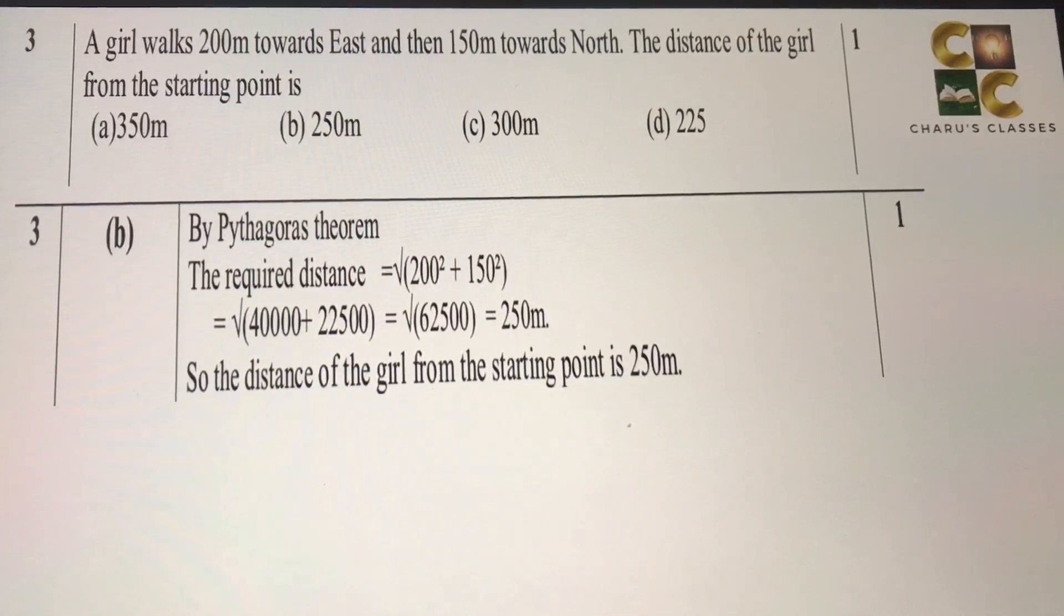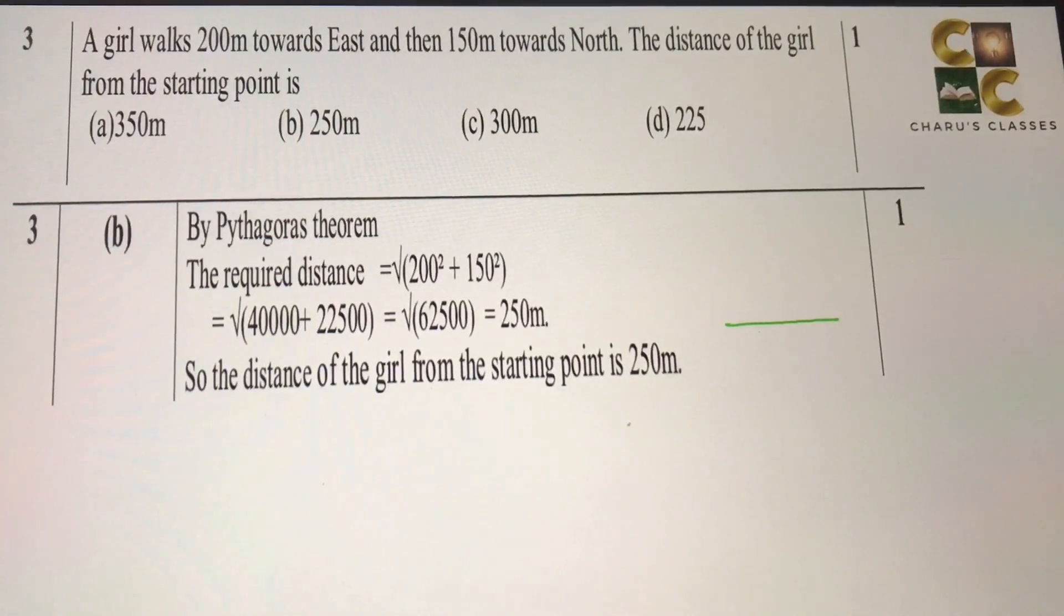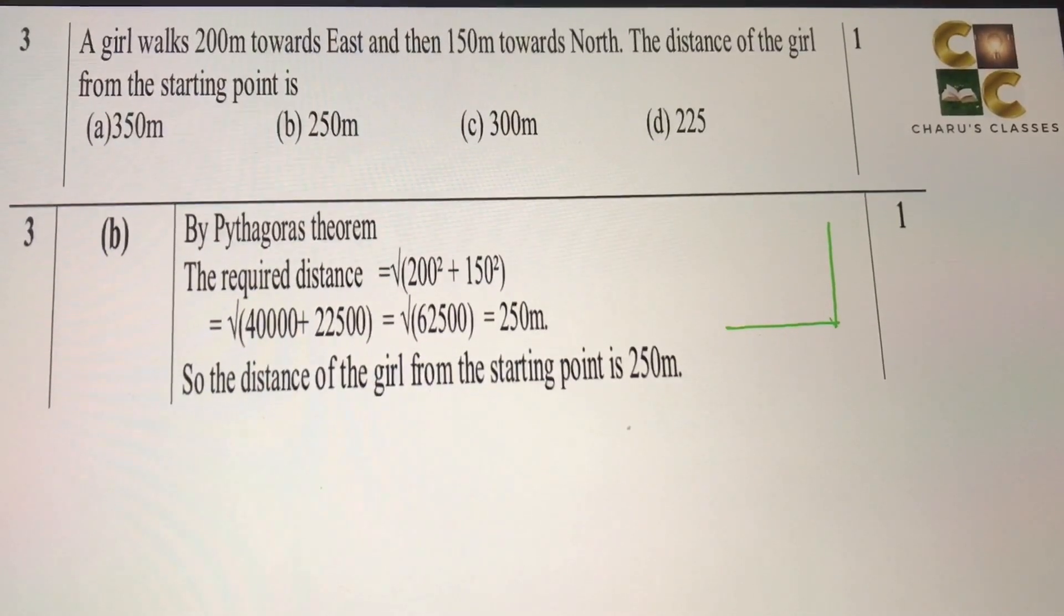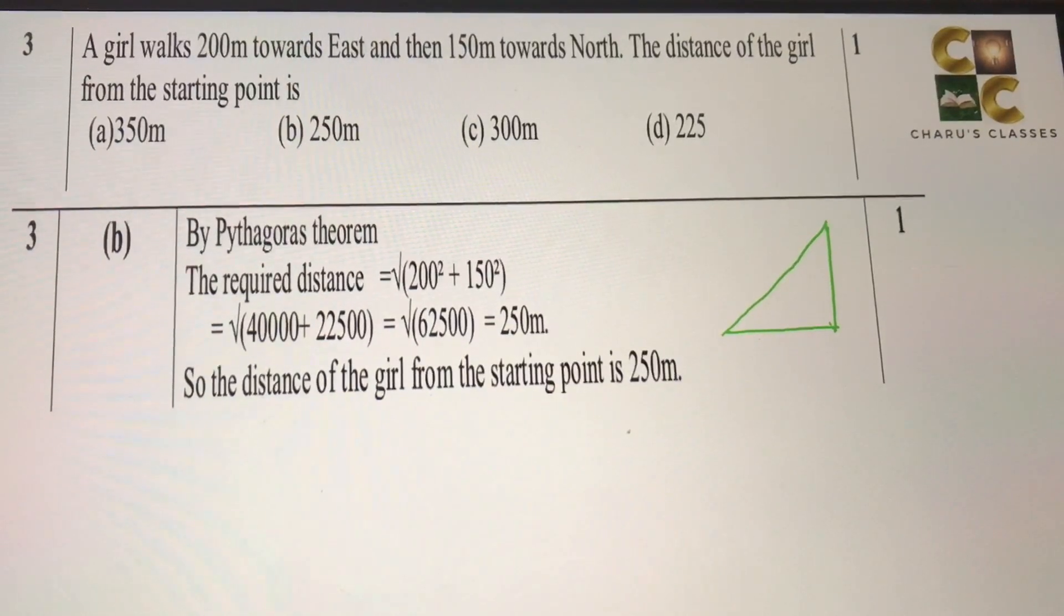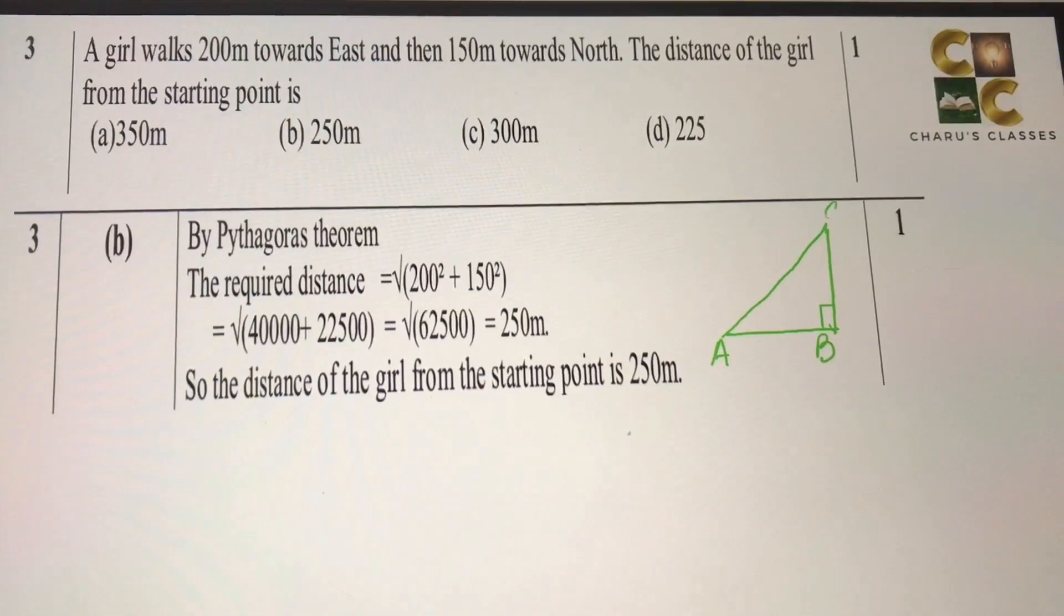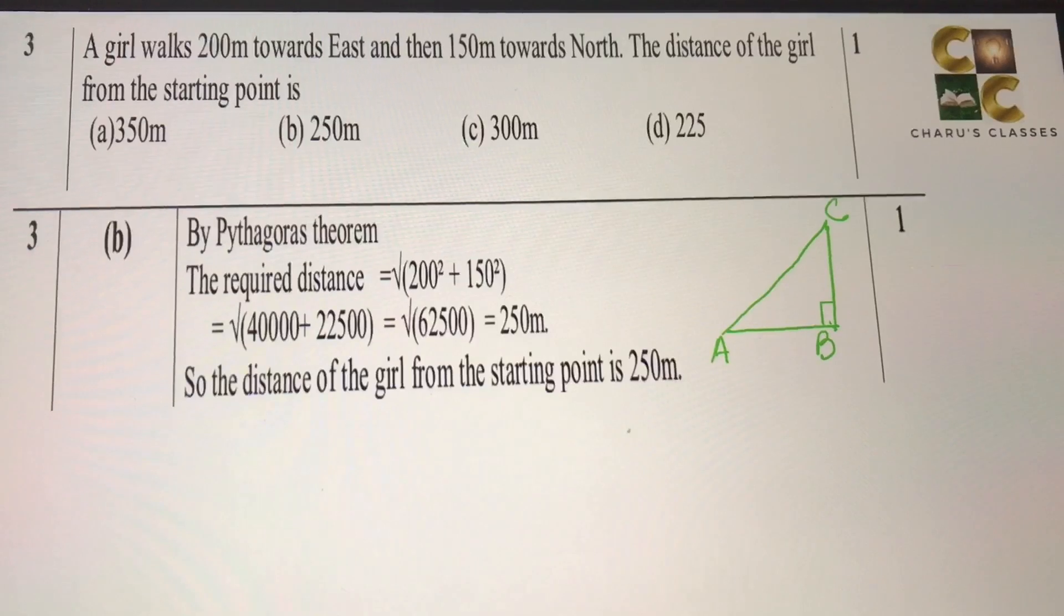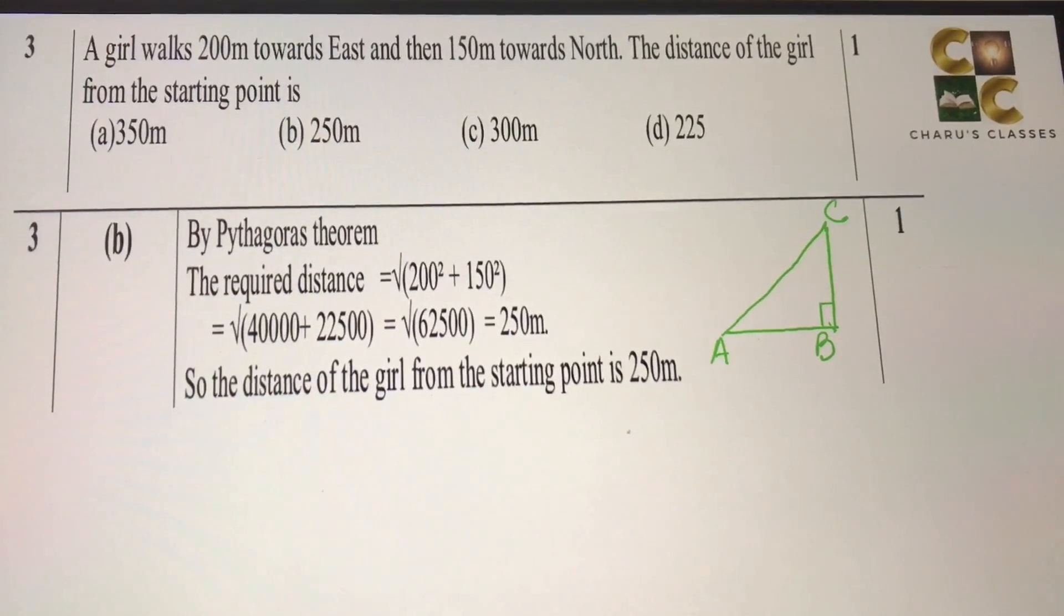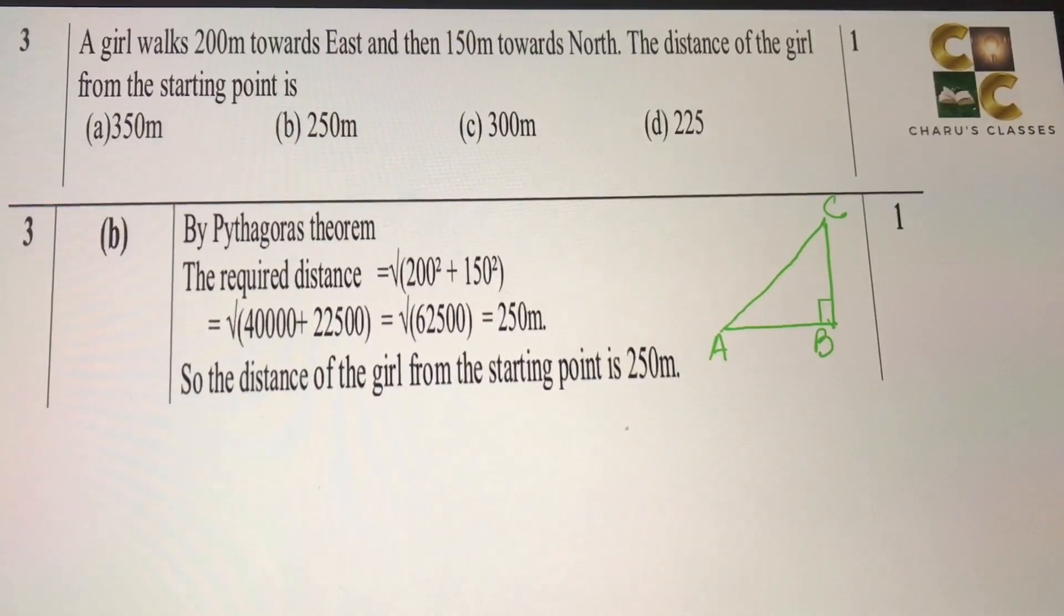Third question: a girl walks 200 meters towards east, and then 150 meters towards north. The distance of the girl from the starting point is? So as you can see, here a right angle triangle will form, and all you have to do is use the Pythagoras theorem. That is, the hypotenuse square is equal to the sum of square of other two sides. If you solve that, your answer is 250 meters.